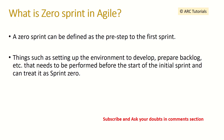What is a zero sprint in agile? A zero sprint is defined as the pre-step to the first sprint. Activities such as setting up the development environment and preparing the backlog — things that need to be done before starting the sprint — are called the initial sprint or sprint zero.